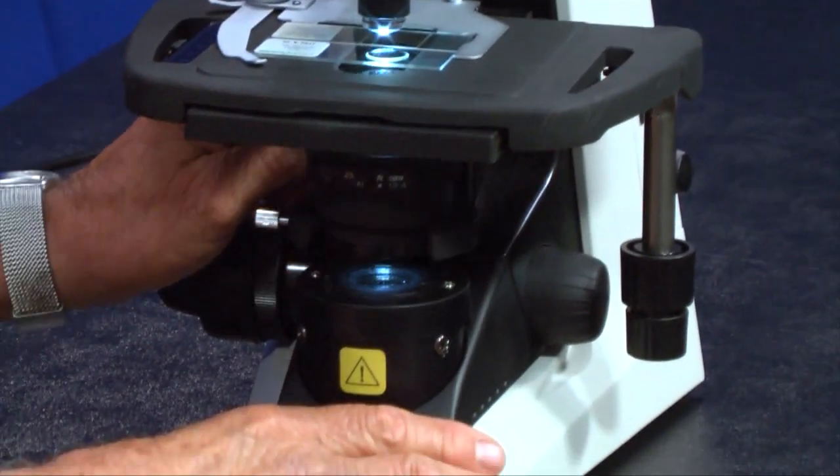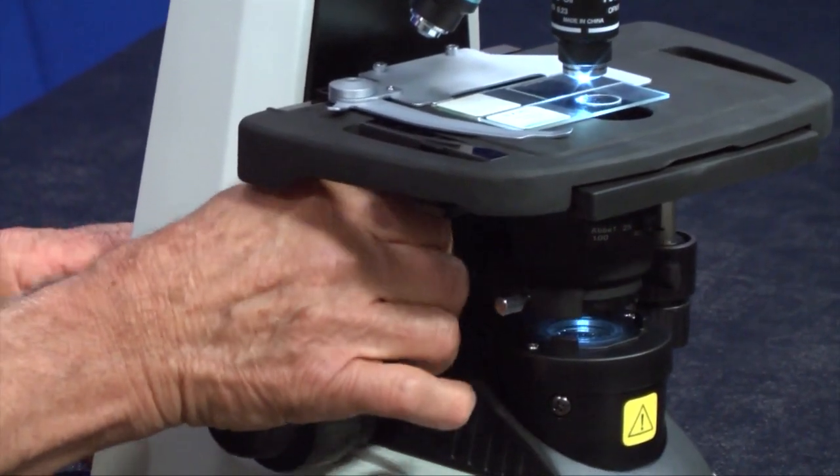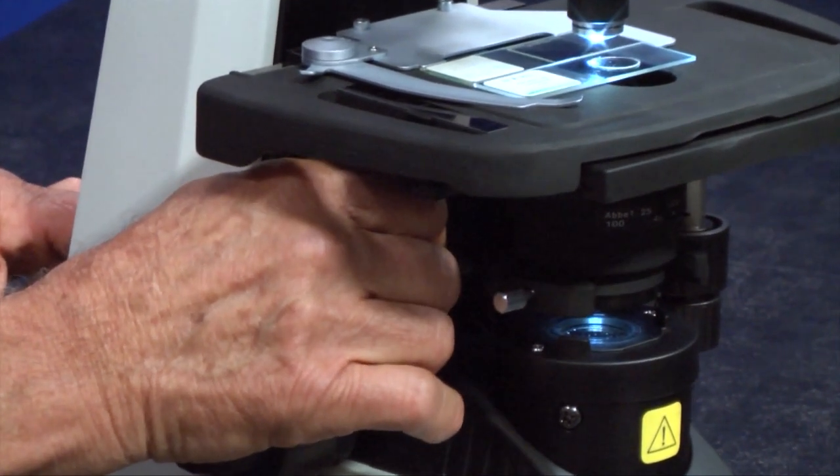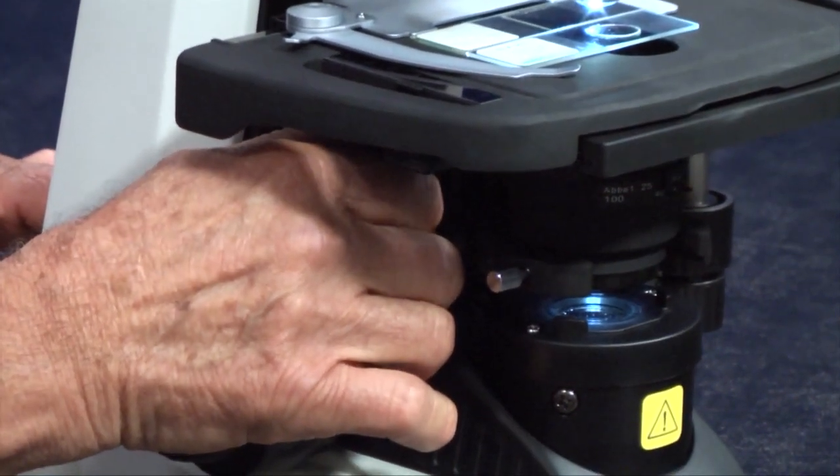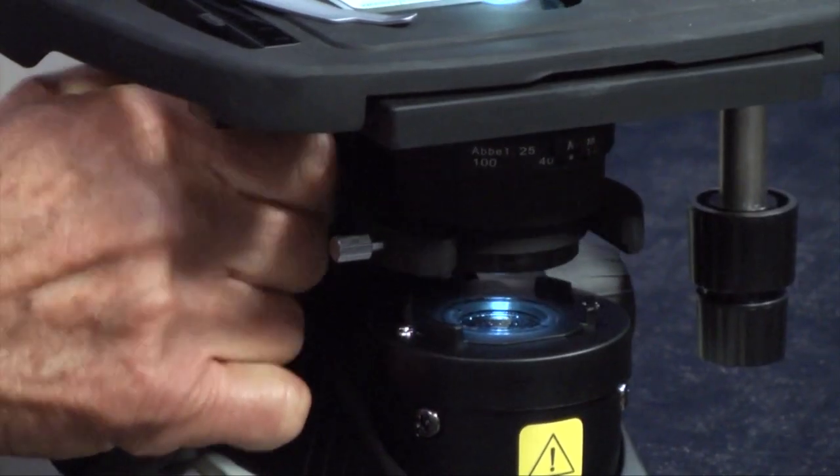You can adjust the height of the condenser with a knob on this side of the microscope. Frequently people do drop the condenser down, especially when they have a very low contrast specimen. That's why it's on a rack and pinion that allows it to go up and down like so.